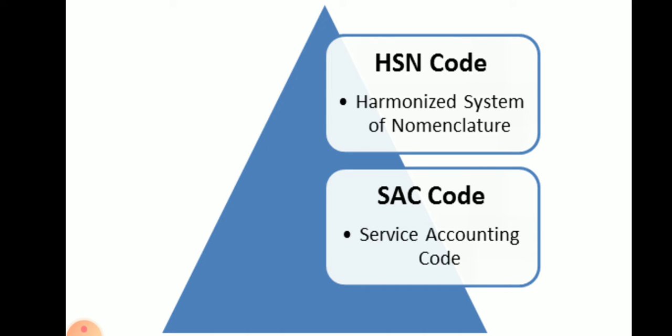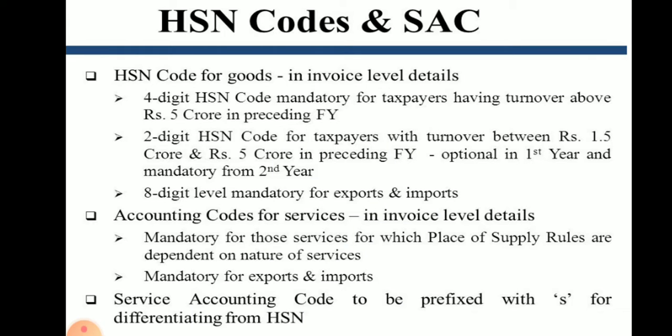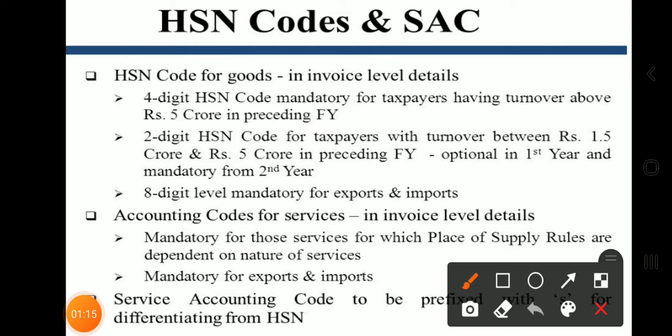Along with the HSN Code, we also study SAC Code, that is the Service Accounting Code. As discussed earlier, six-digit and four-digit codes are used. A four-digit HSN Code is mandatory for taxpayers having turnover above Rs. 5 crore in the preceding financial year.